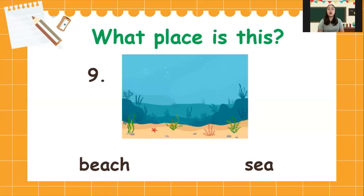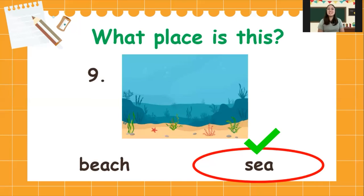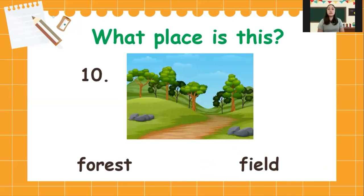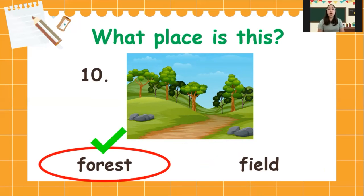Next, number nine, what place is this? Is it beach or sea? The answer is sea. Very good. Next, number ten, what place is this? Is it forest or field? The answer is forest. Very good. Good job, everyone!